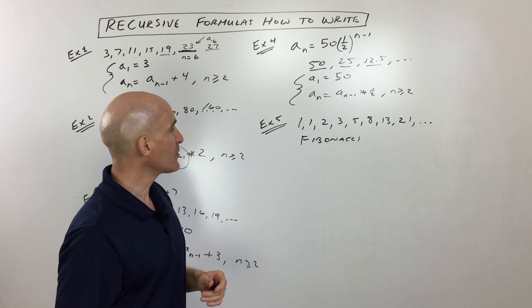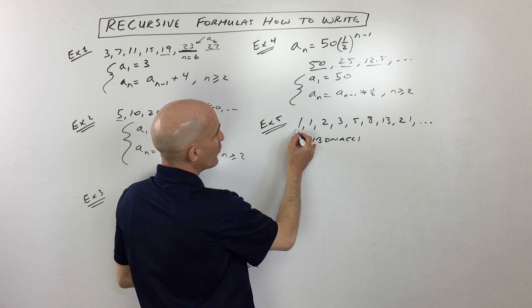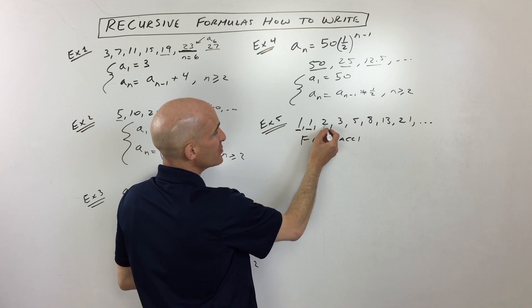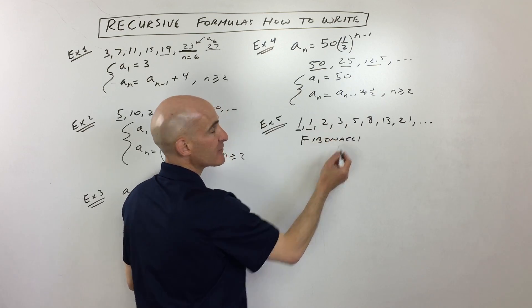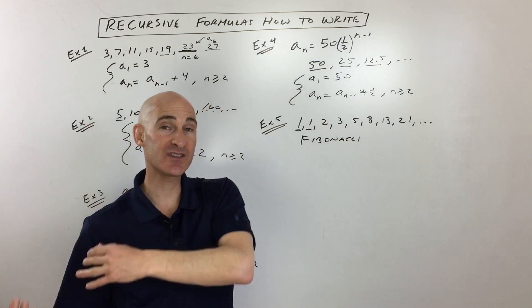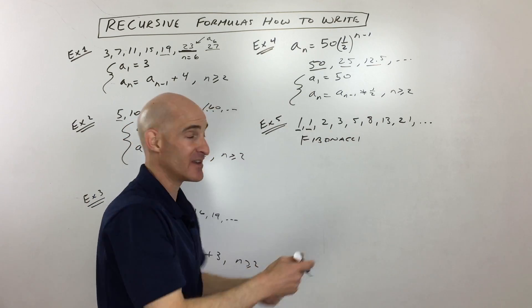Well, what's happening here is we're adding 1 and 1 together to get 2. We're adding 1 and 2 together to get 3. We're adding 2 and 3 together to get 5. Basically what we're doing is we're adding the two previous terms together to get the next term.